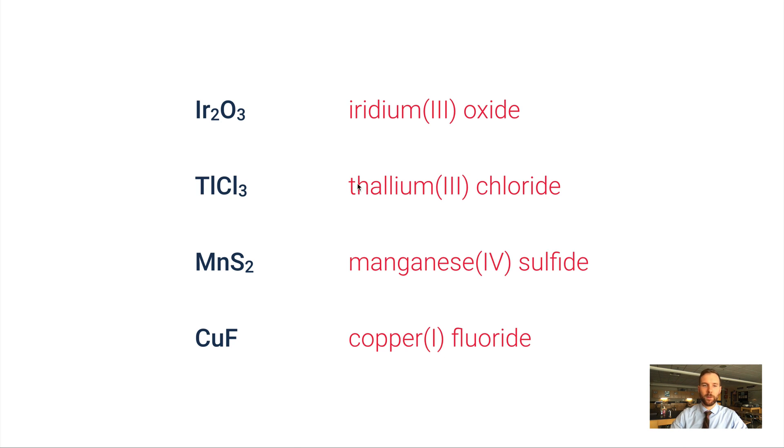I can go through one of these. With Ir₂O₃, I know oxygen has a minus 2 charge, but there's three of them, so the negative side has a minus 6 charge. The positive side has to be positive 6, but there's two of those, so I have to have iridium plus 3. That's how I know it's iridium(III) oxide.